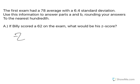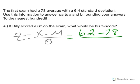Well, recall that the z-score is value minus the mean divided by the standard deviation. So Billy's value is 62, his mean is 78, and the standard deviation is 6.4.